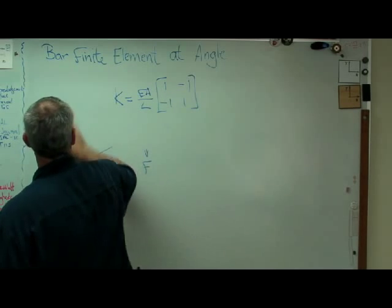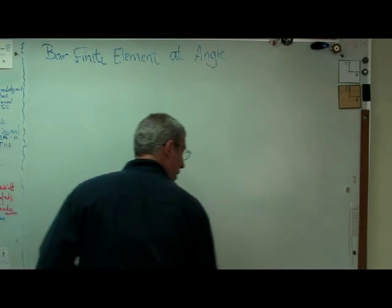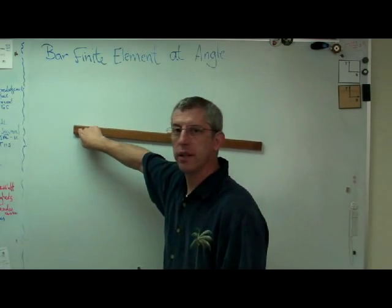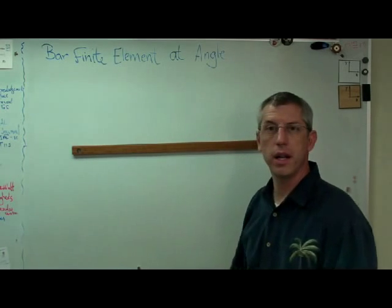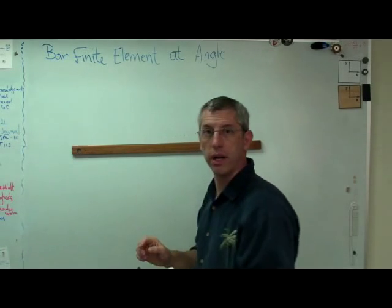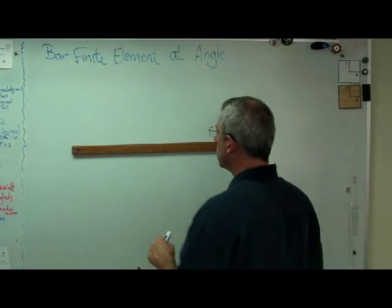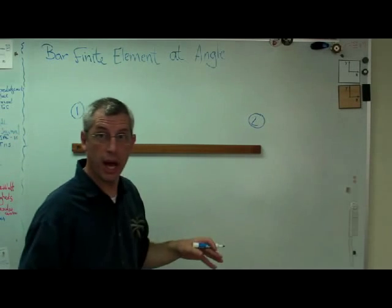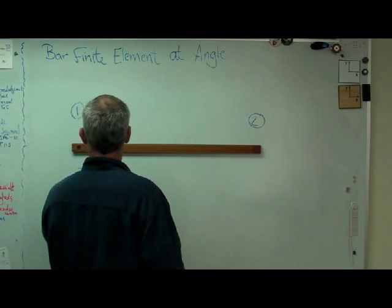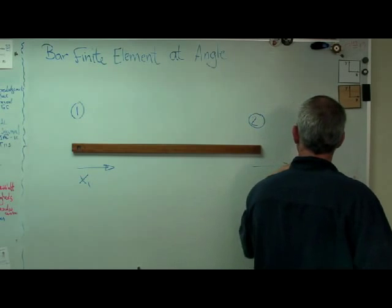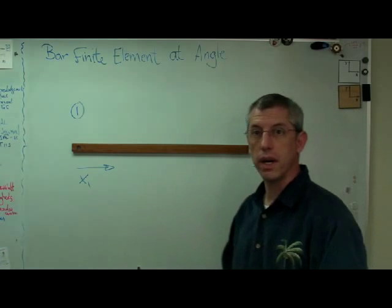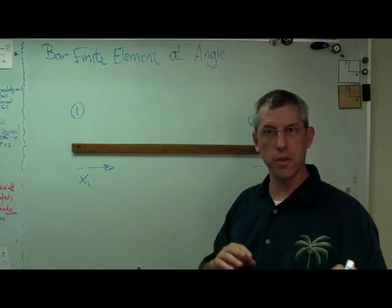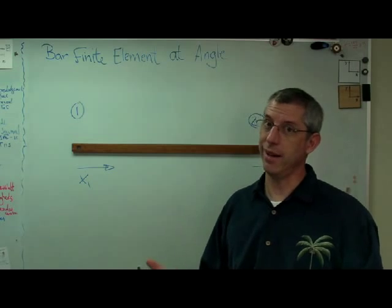So let's write out the problem here. Here's a finite element — it's got one end and the other end. It only can extend or contract — stretch or contract, tension or compression. So it only has two degrees of freedom. This is grid point one here, and that's grid point two here for the element. X1 is there and X2 is right there. If this is all a surprise to you, go back and look at some of the other videos, catch up, and then come back to this one.